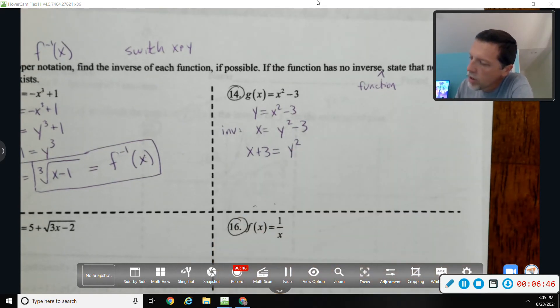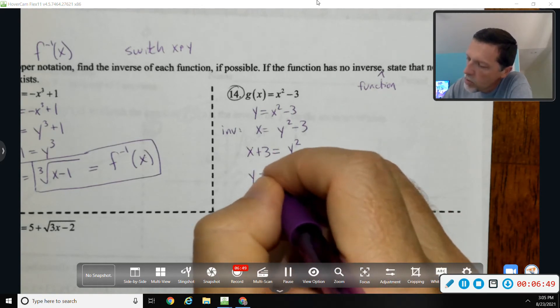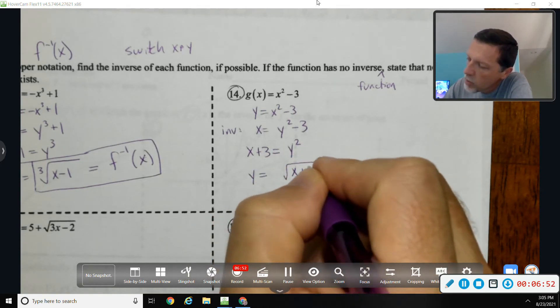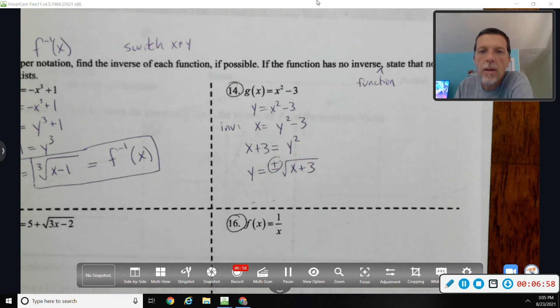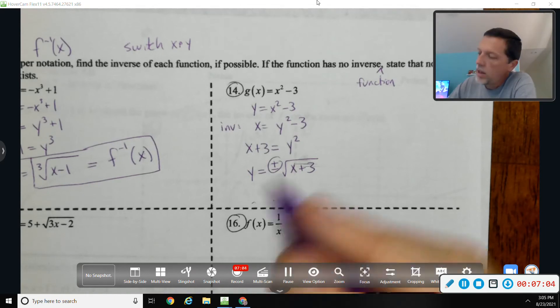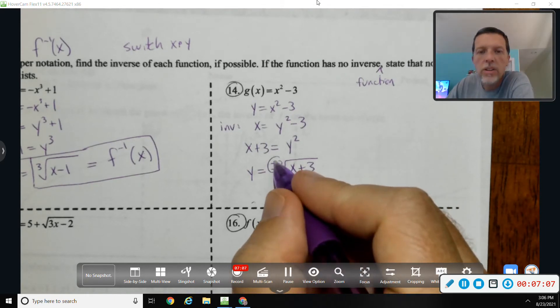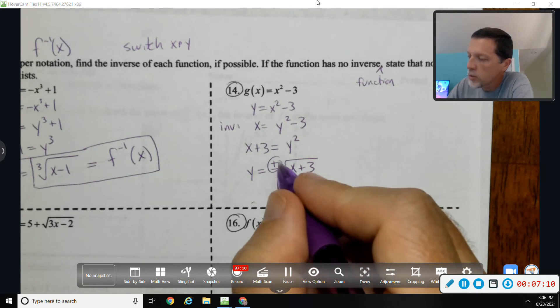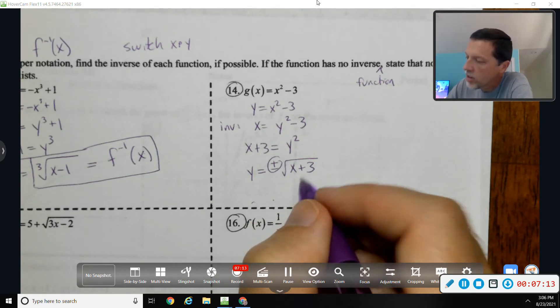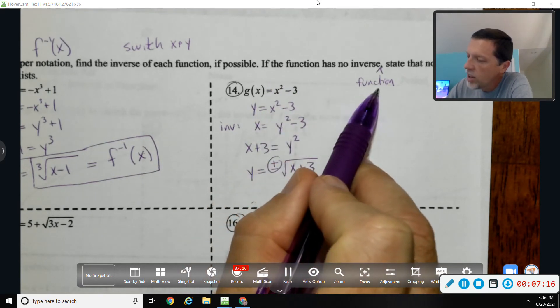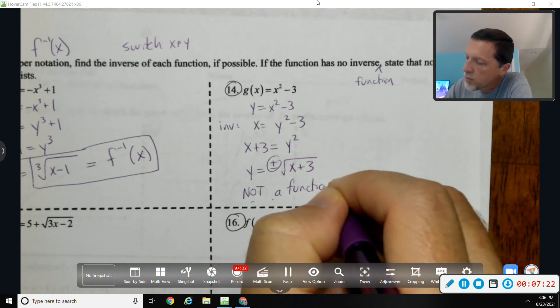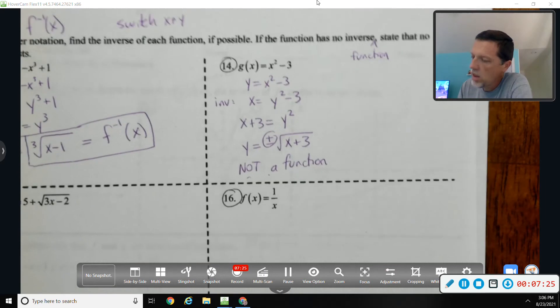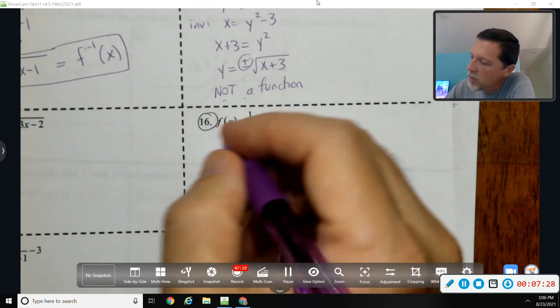So y squared equals x plus three. Square root both sides, but when you square root both sides, you have to remember to put the plus or minus on there. And then because of the plus or minus, that means that this is not a function. Remember that happened before where one input gives you two outputs. The vending machine—if I punch in zero, I don't know if I'm getting plus or minus, so that's not a function. If the function has no inverse function, state that no inverse exists. So you could just say not a function.